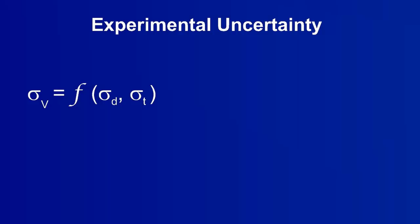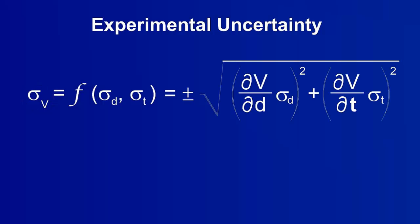Uncertainty is represented with the lowercase Greek letter sigma. Let's look at the uncertainty of the velocity. It is equal to the root sum of the squares, or RSS, of a contribution from the uncertainty of the distance, and a contribution from the uncertainty of the time. Let's take a closer look at one of these contributions.